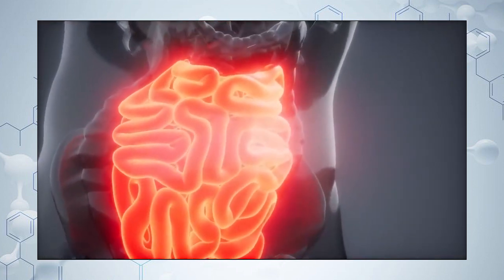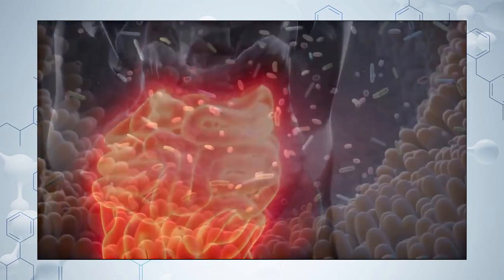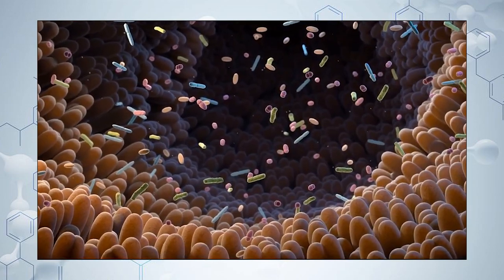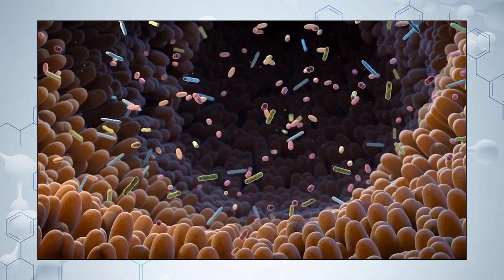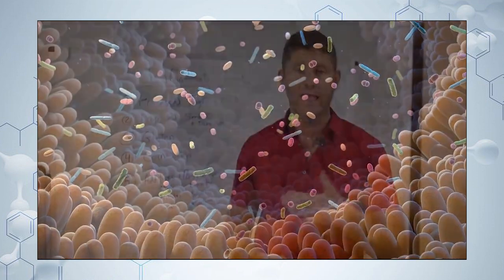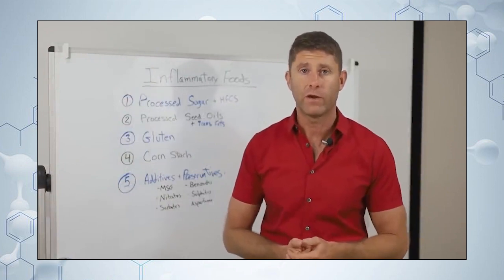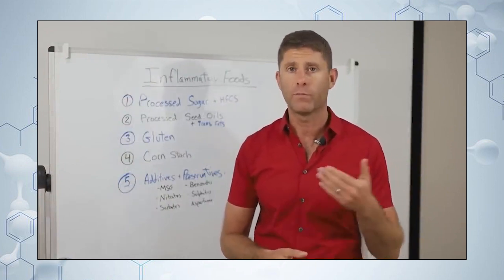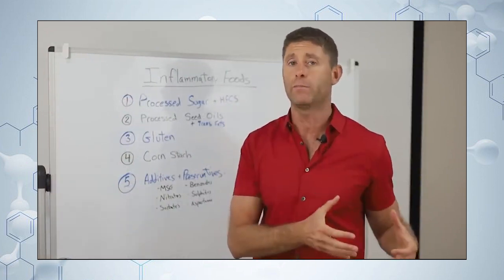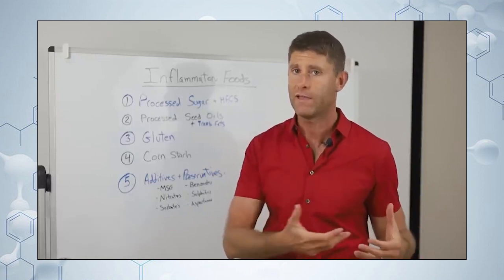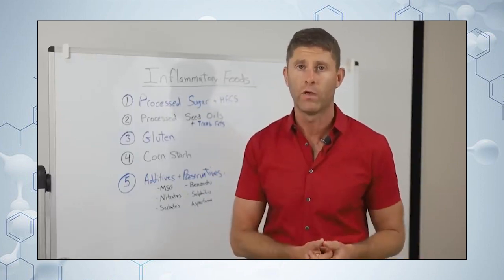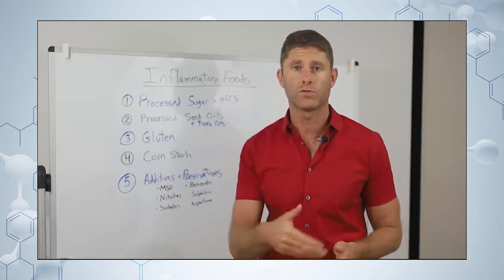And that increases the permeability and allows large undigested food molecules, as well as bacteria and bacterial waste - things like LPS, which we call endotoxin - as well as yeast, parasites, and all the different microbial waste to seep out into the bloodstream. And all that microbial waste and large undigested food particles will stimulate the immune system to drive up inflammation in the body.